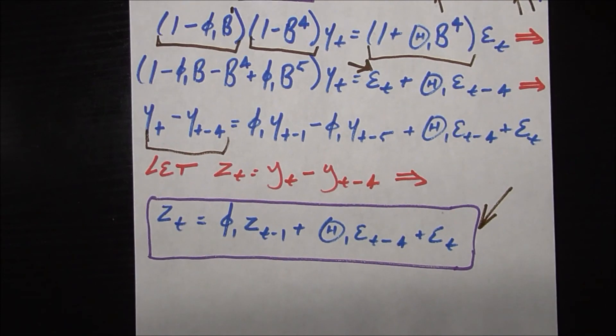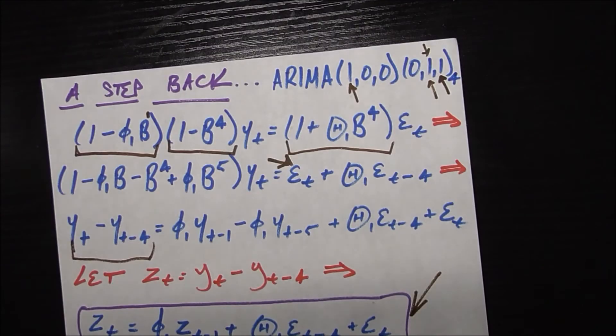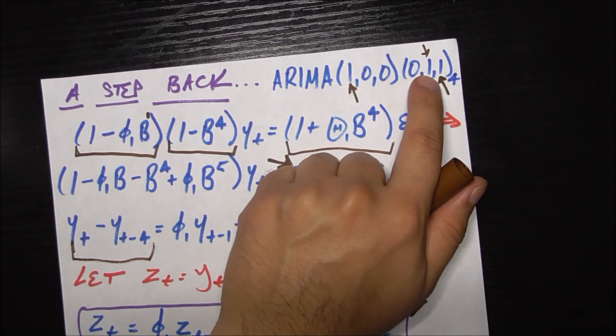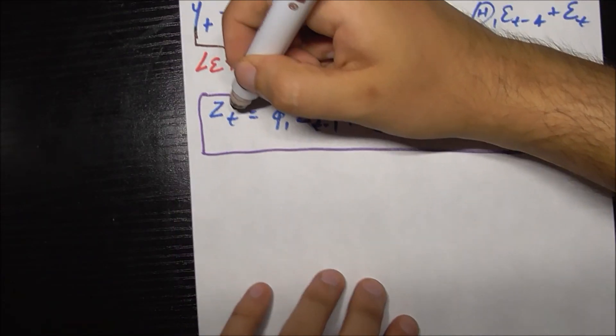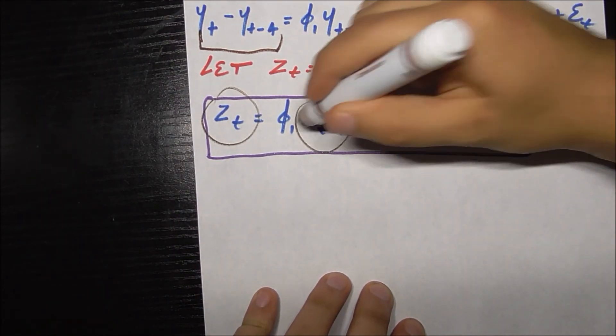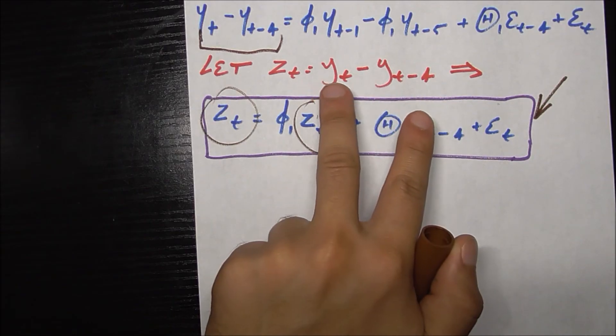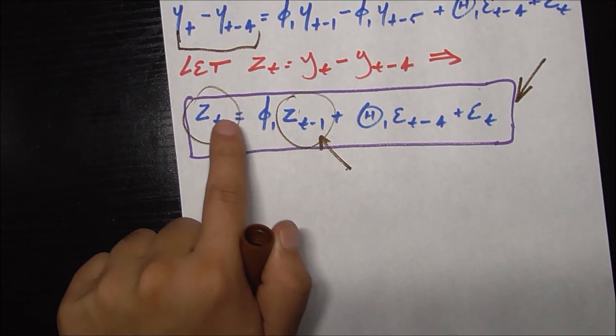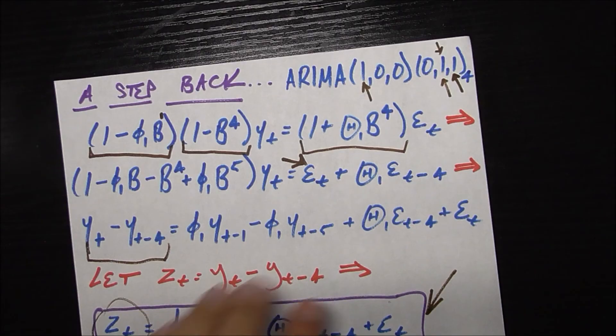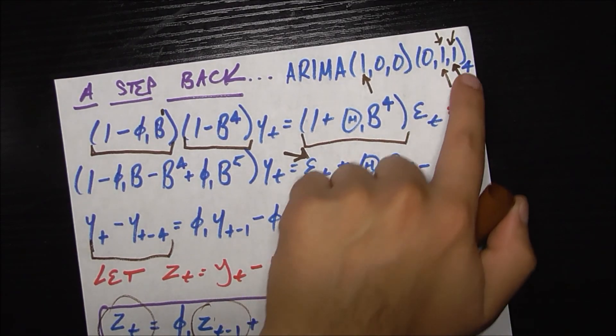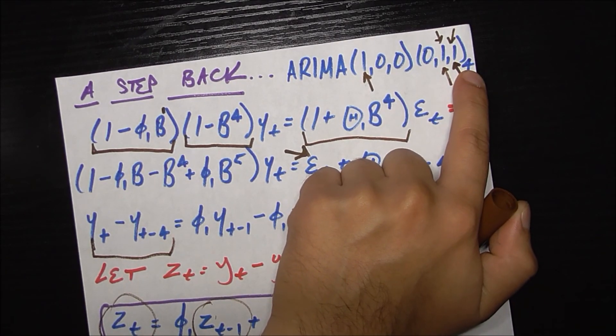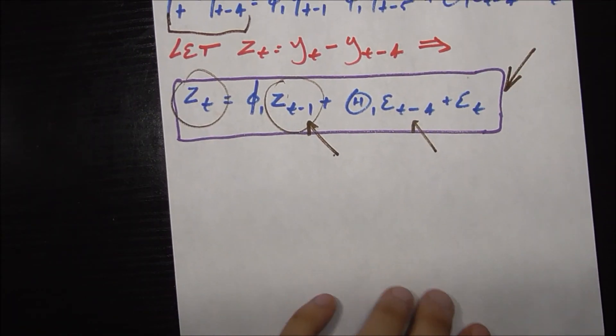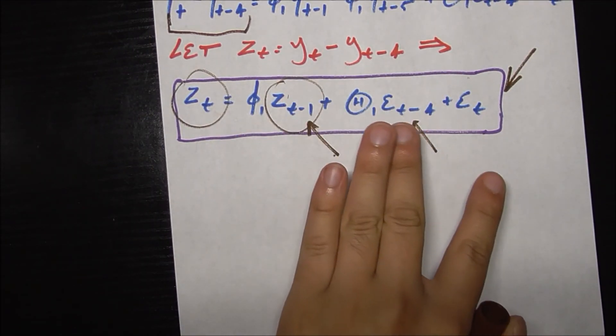The first piece was this integrated bit, the seasonal integrated bit of order one, but of course that's four periods ago. How is that taken into account? That's taken into account by the fact that z sub t is that difference from the current period to four periods ago. How do we factor in the AR1 component which is not seasonal? Of course that's right here because this is t minus one and this is just t. And lastly how do we factor in the seasonal moving average component that has the seasonal factor of four on it? Of course that's taken care of by the fact that we're also predicting based on the error four periods ago.